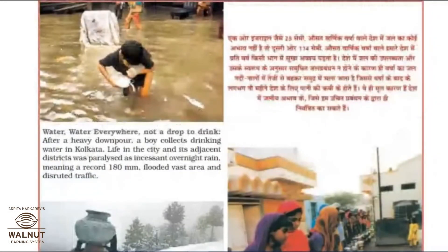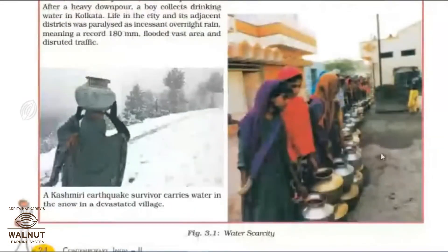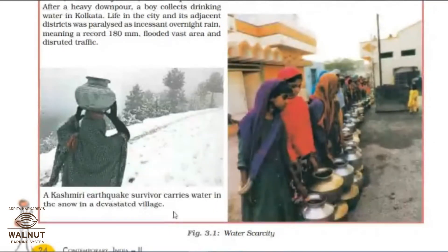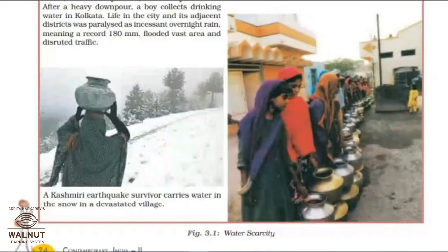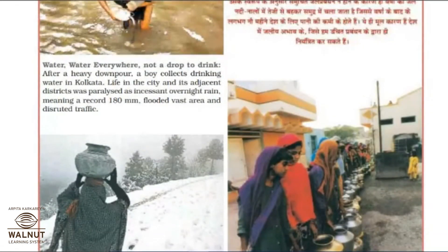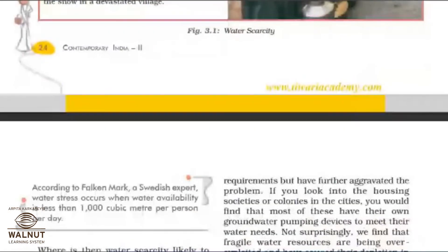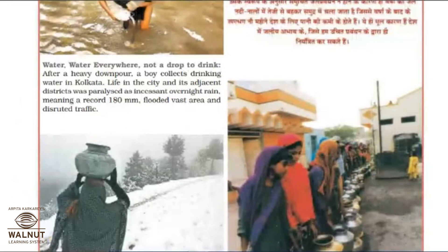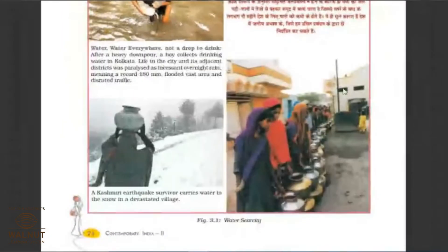In Mumbai, Bihar, Assam, and Odisha throughout India there has been heavy rain and flooding, but that flood water cannot be drunk. In contrast, in villages there are long queues for water. An image shows a Kashmiri earthquake survivor carrying just one pot of water through snow in a devastated village. These three pictures show how precious water is and how important it is to conserve and manage it.